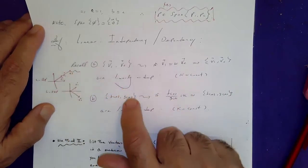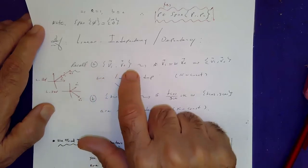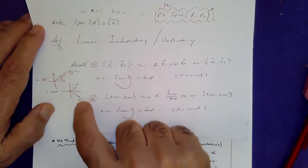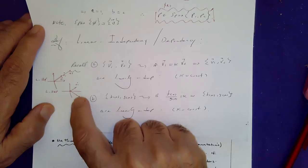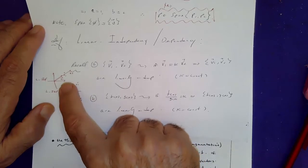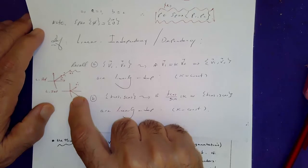Do you see it? On the other hand, if two vectors are non-parallel, then we call these linearly independent. So these guys are linearly dependent, these guys are linearly independent.